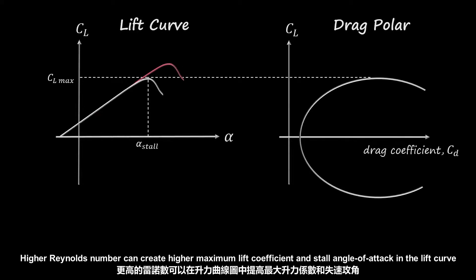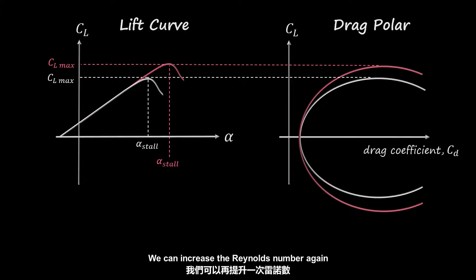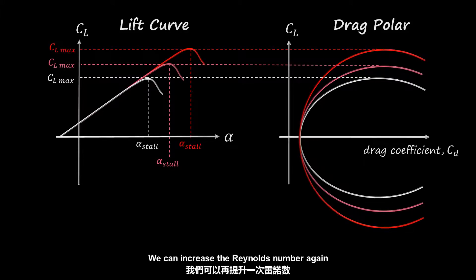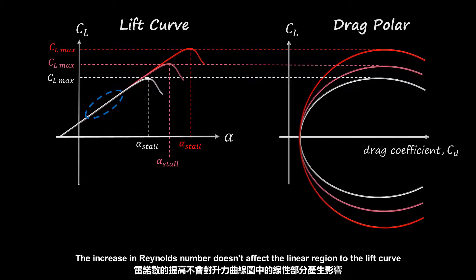Higher Reynolds number can create a higher maximum lift coefficient and stall angle of attack in the lift curve, and make the drag polar become wider. However, the increase in Reynolds number does not affect the linear region of the lift curve or the minimum drag coefficient in the drag polar.